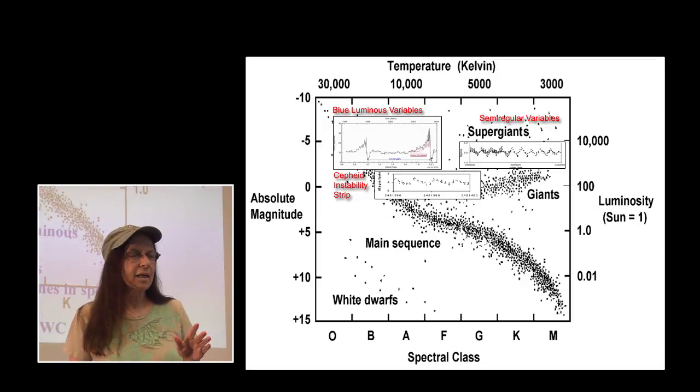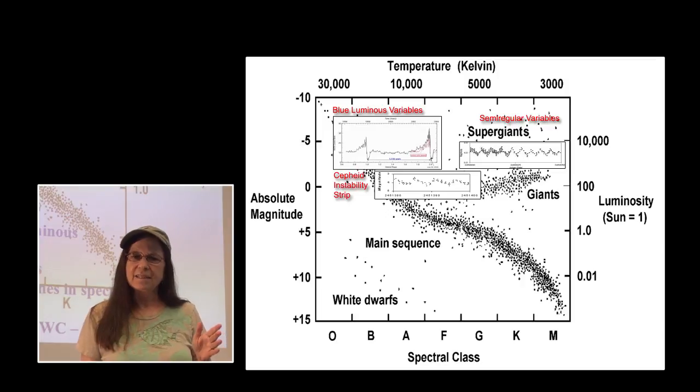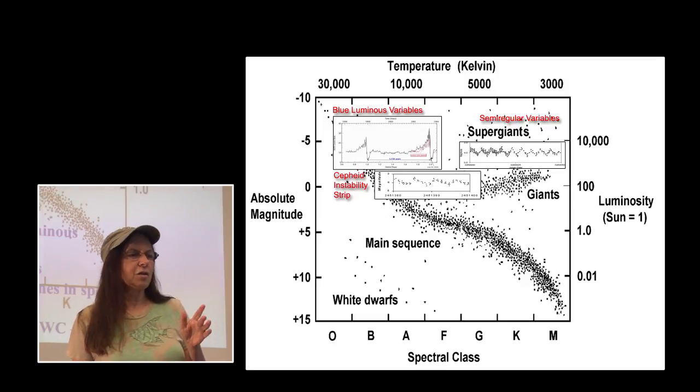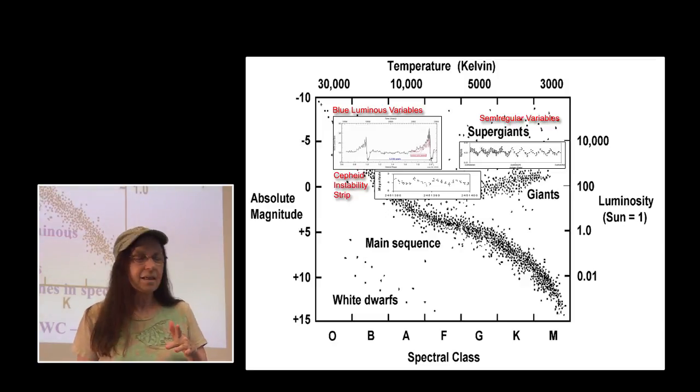There are WN-Rayets, strong in nitrogen. They have a very broad emission line in nitrogen. There are also the WC kind, which has, besides the helium, carbon and oxygen, broad emission lines there.